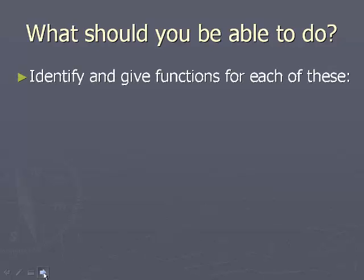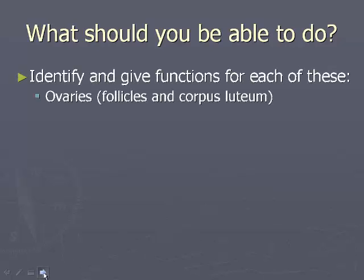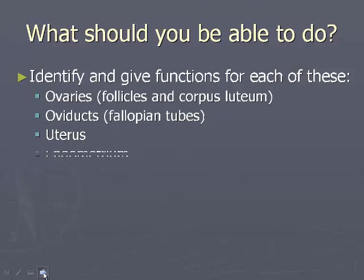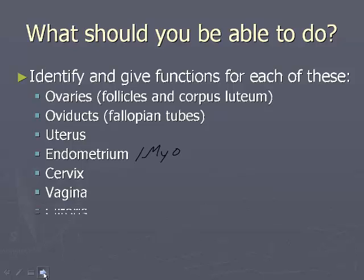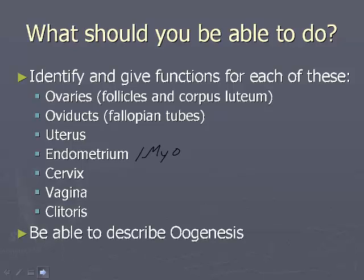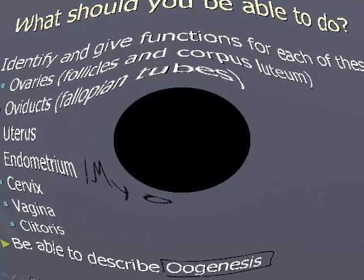You need to be able to identify and give the functions of all of these structures: ovaries, follicles and corpus luteum, the oviducts, the uterus, endometrium and myometrium, the cervix, vagina, and clitoris. You should also be able to describe the stages and steps of oogenesis. This should be a nice easy one before we transition into female hormones, which will be quite complicated. Have a wonderful night.